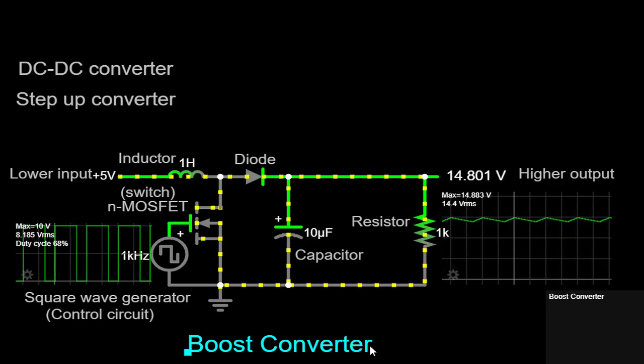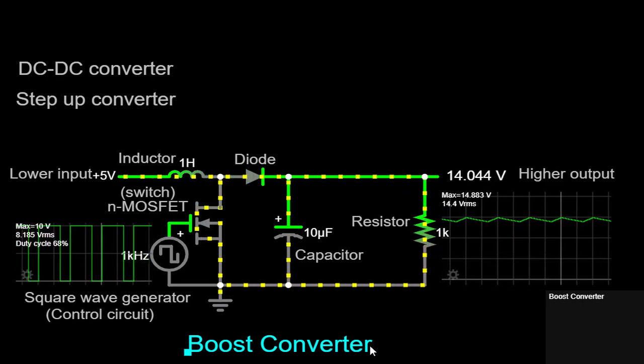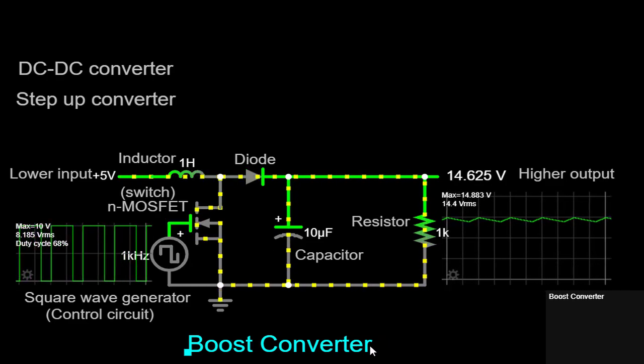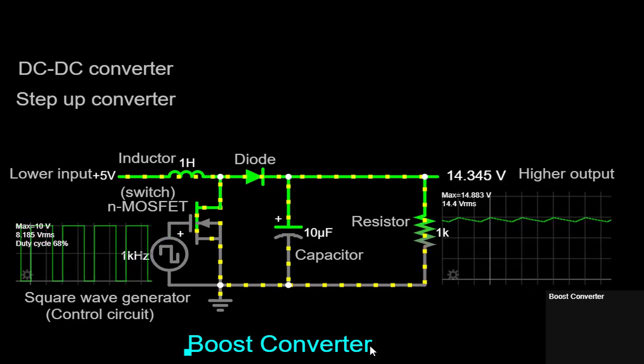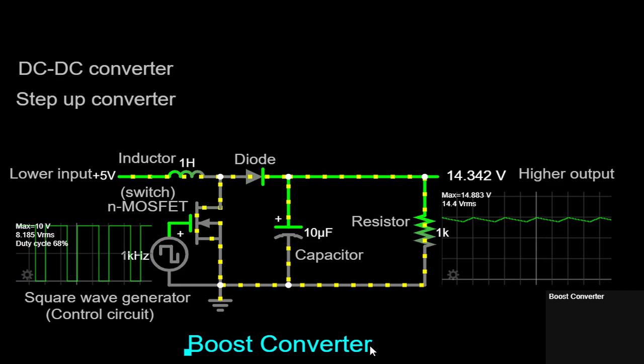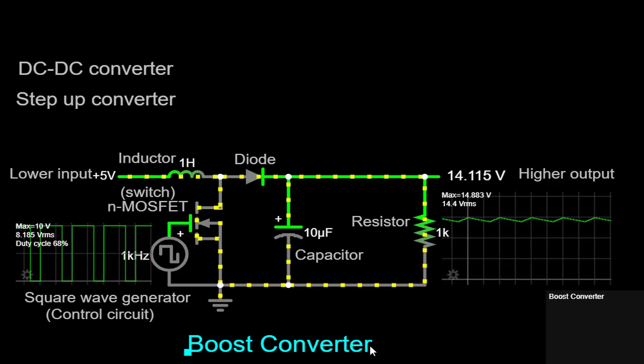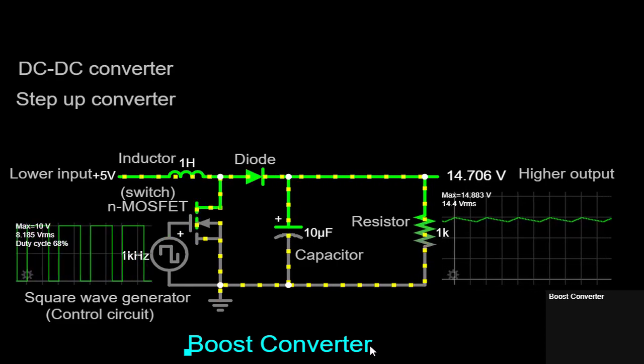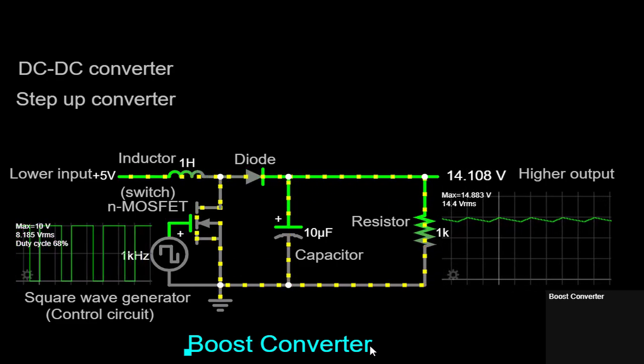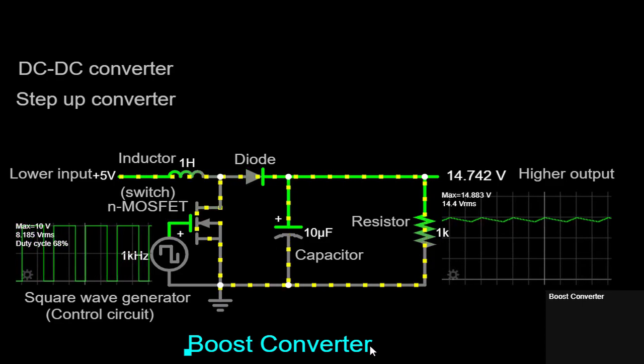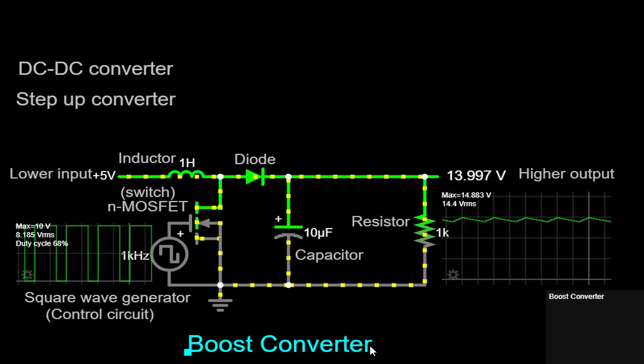Moreover, the boost converter can operate in continuous or discontinuous modes, depending on the load and operating conditions. In continuous mode, the inductor current never reaches zero, resulting in smoother output voltage and reduced ripple. In discontinuous mode, the inductor current drops to zero during each switching cycle, which can be advantageous in certain applications.